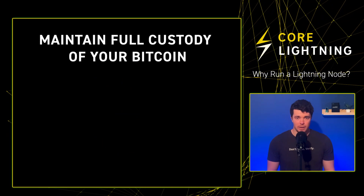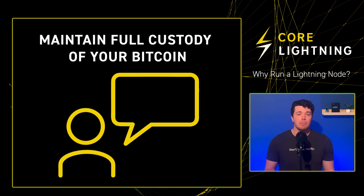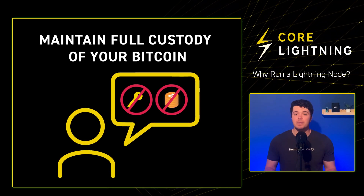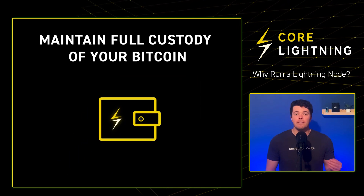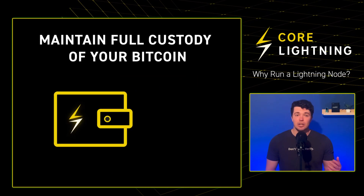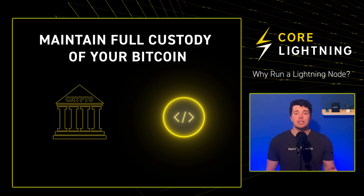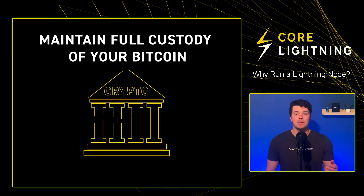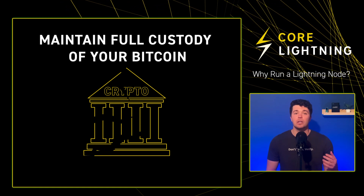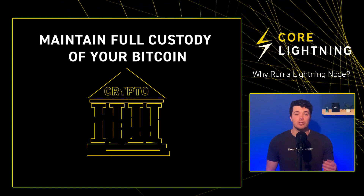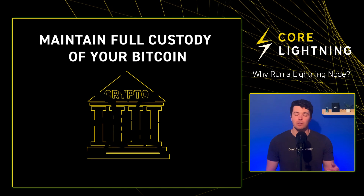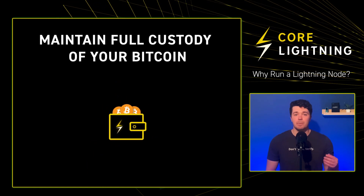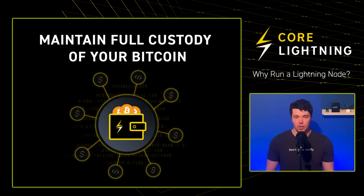First: maintain full custody of your Bitcoin. You might be familiar with the mantra, 'not your keys, not your Bitcoin.' This principle applies to the Lightning Network as well. If your Lightning wallet is not connected to your own Lightning node and you're using a custodial solution, the wallet provider could potentially go out of business or be nefarious, and you could lose access to your sats, or they could potentially track your transactions and you will have lost your privacy. To avoid these risks, it's essential to set up your wallet to connect to your own personal Lightning node.